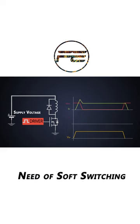When we multiply the VDS and drain current during the switching process of the MOSFET, we get significant power dissipation. This power is nothing but the power loss across the MOSFET, which we call switching power loss.